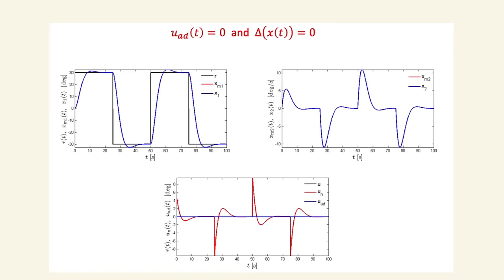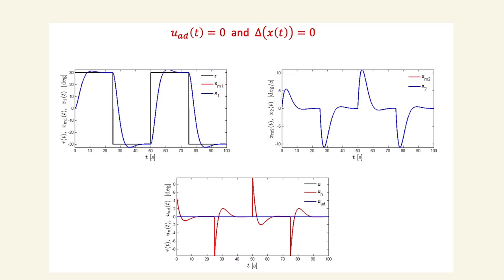Here is the simulation result with no uncertainty and no adaptation. The command r is shown, and the reference model's first state matches the roll angle perfectly — no adaptation is needed and the system behaves ideally. The second states (roll rate and reference model roll rate) also match, and the control input is shown.